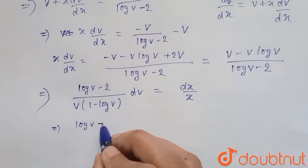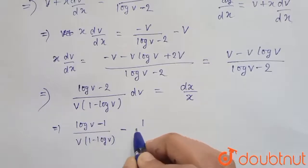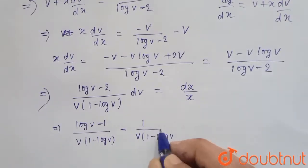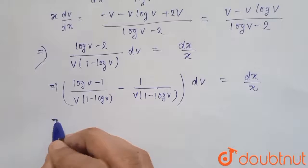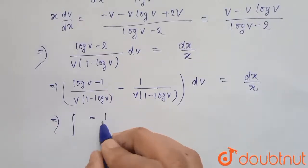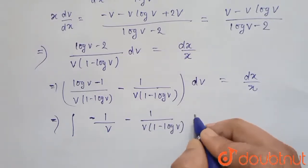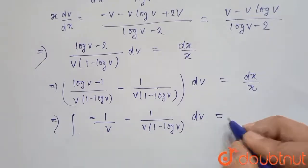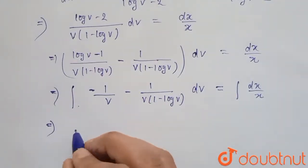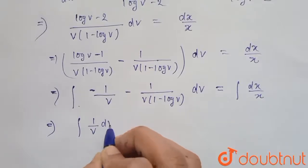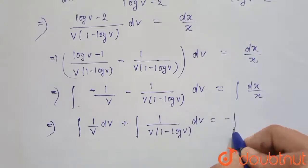We can split the left side and write the integration as: integration of 1/v dv plus integration of 1/v times 1/(1 minus log v) dv equals minus integration of dx/x.